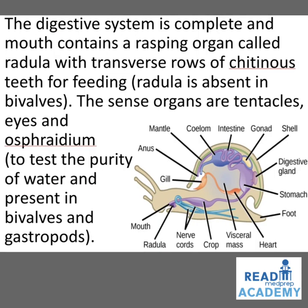The digestive system is complete and the mouth contains a rasping organ called the radula with transverse rows of chitinous teeth for feeding. Radula is absent in bivalves. The sense organs are tentacles, eyes, and osphradium to test the purity of water, present in bivalves and gastropods. In the image on the right side, you can see the internal structure: mouth, radula, nerve cords, crop, visceral mass, heart, foot, stomach, digestive glands, shell, gonads, intestine, coelom, mantle, mantle cavity, and anus.